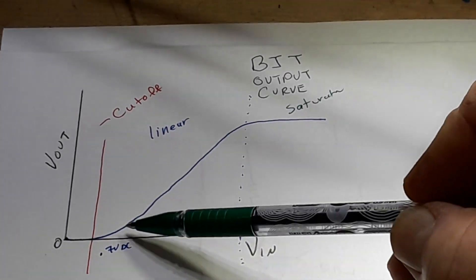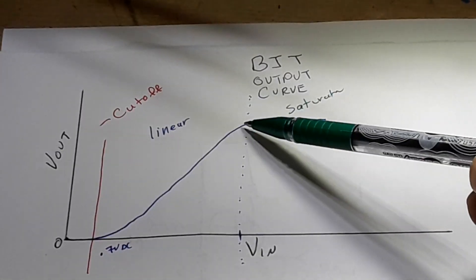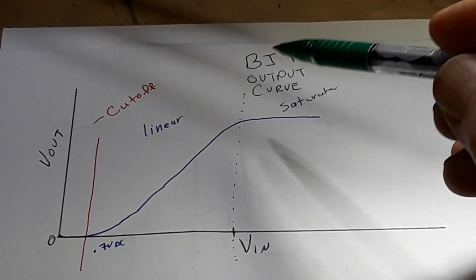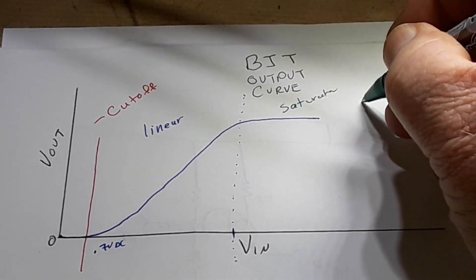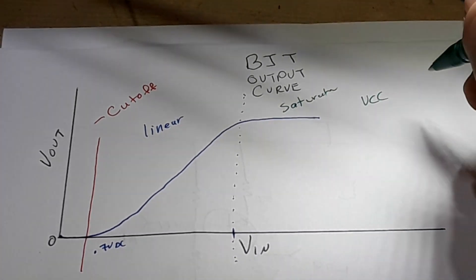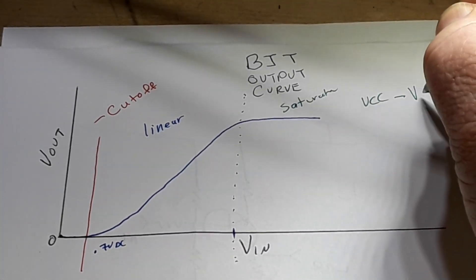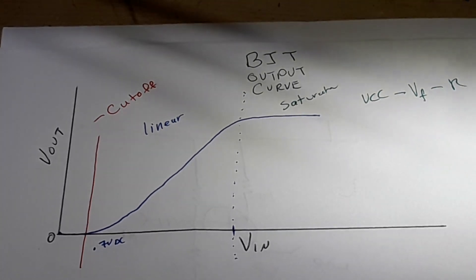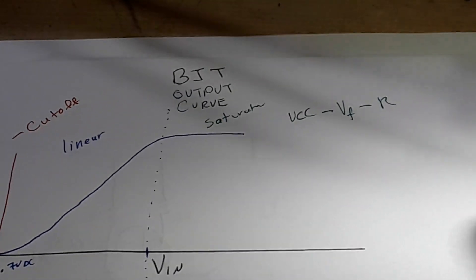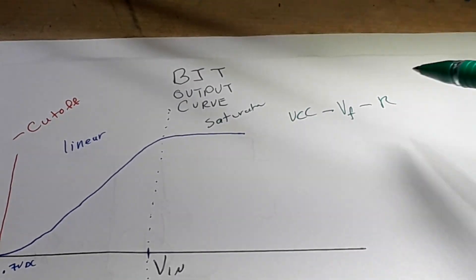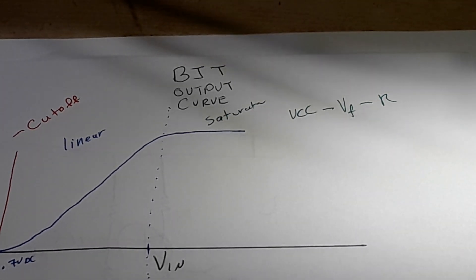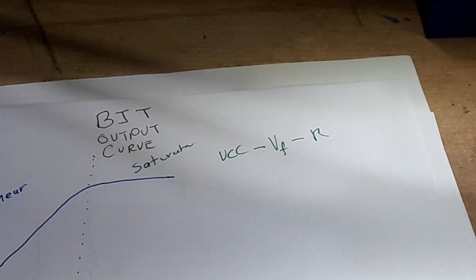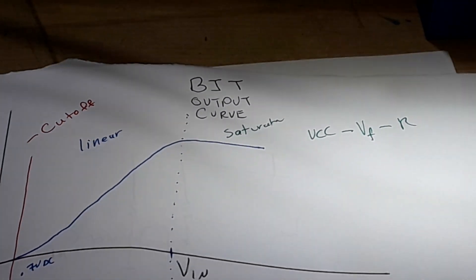But once we have reached the point where it cannot give us any more output, now we have reached what is called the saturation zone. So these are three of the modes: cutoff where nothing is coming out, the linear range where we have a range of things coming out, and saturation where it's fully on.